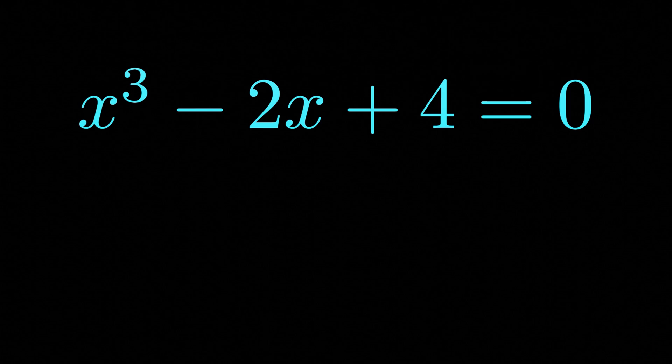Well, we could use something called Cardano's method. Note that Cardano's method requires our equation to be in the so-called depressed form, i.e. not including the quadratic term. So if we had the quadratic term we would have to eliminate that using a substitution, but thankfully our equation doesn't include a quadratic.